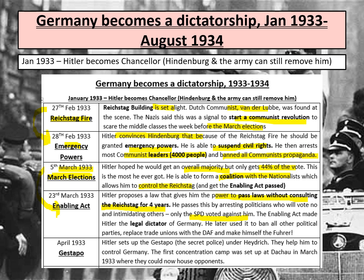In April 1933, Hitler establishes the Gestapo - the secret state police - under someone called Heydrich. He also establishes the first concentration camp at Dachau. And so Nazi terror begins.